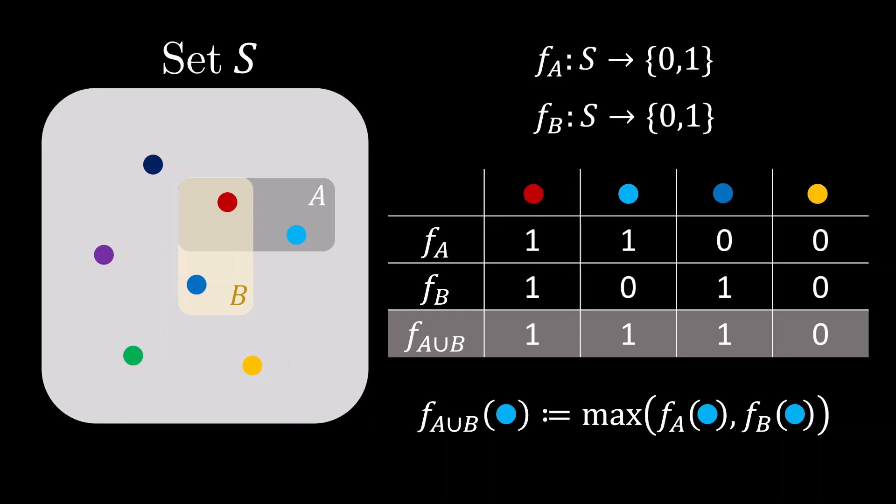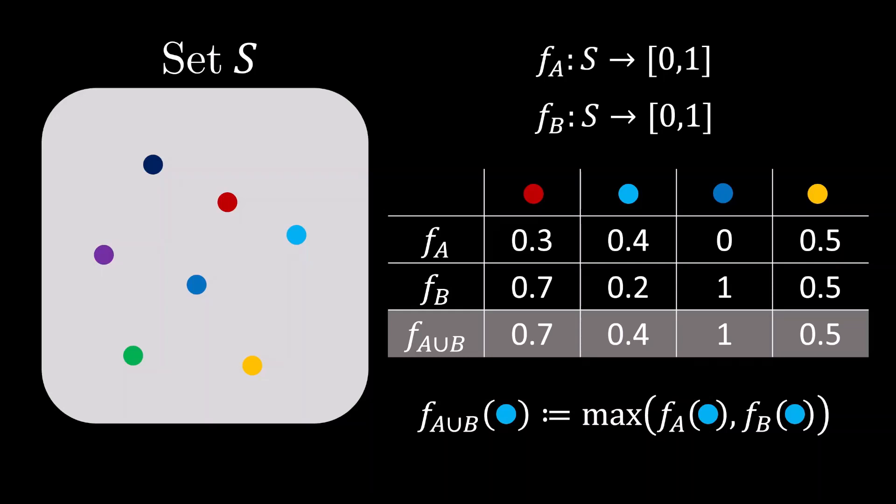This gives us an idea of how to generalize the concept of union to fuzzy set theory. Specifically, the membership function describing the union is obtained by taking the maximum of the individual membership functions.